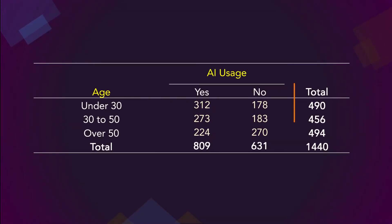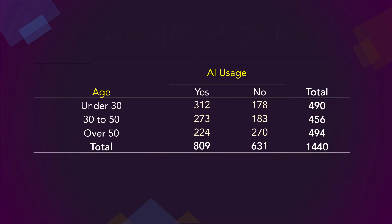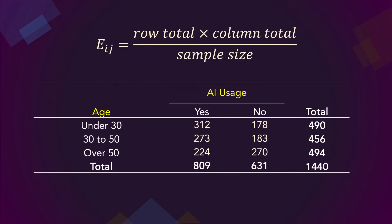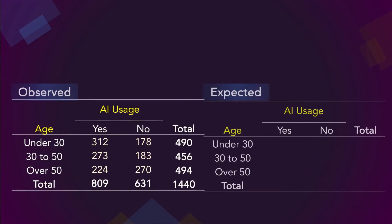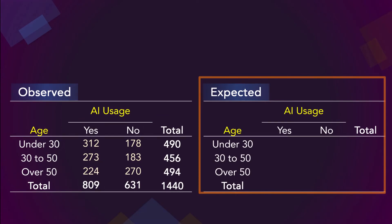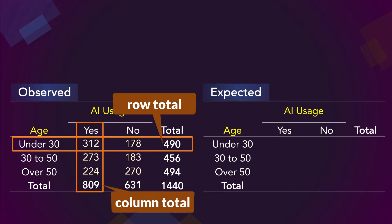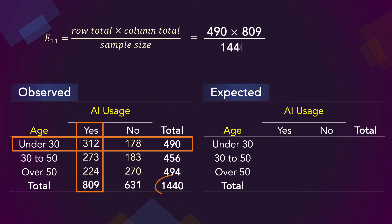Here again is a two-way table showing row and column totals. The expected frequencies are calculated on the assumption that the two variables are independent. As a result, the formula for calculating the expected value for each cell is: row total times column total divided by the sample size n, or grand total, which is 1440 in this case. For the under-30 and yes cell, the row total is 490 and the column total is 809. So the expected value is calculated as 490 times 809 divided by 1440, which gives 275.28.